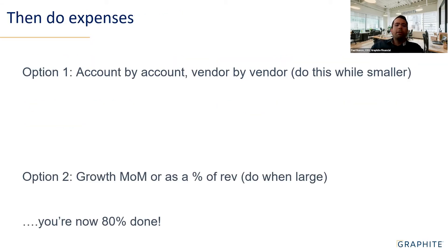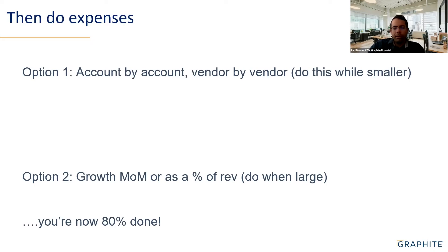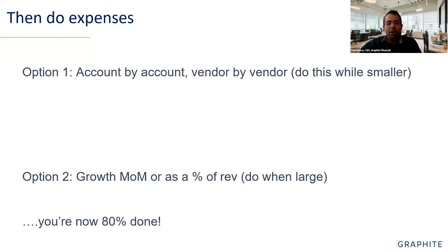For expenses, we go vendor by vendor — even approaching a hundred employees, I still do that. You can also do a growth assumption if you're larger. Between payroll and people, you're about 80% of the way there. The hard part is the revenue side, which I'll spend the next 10 minutes on.